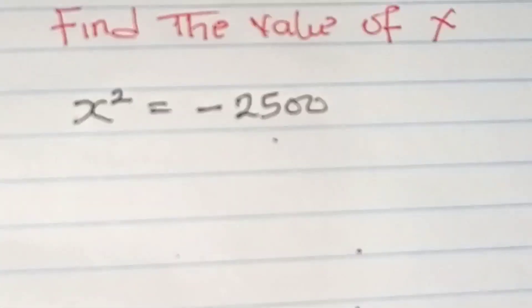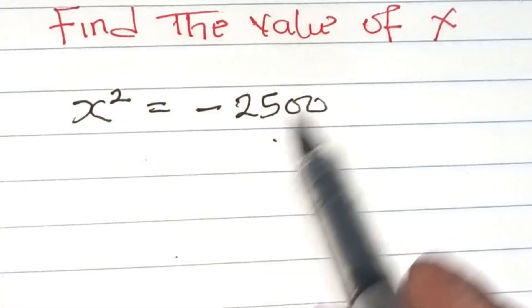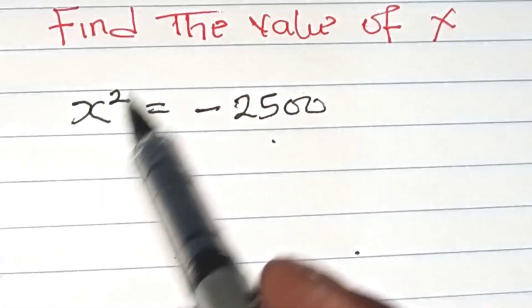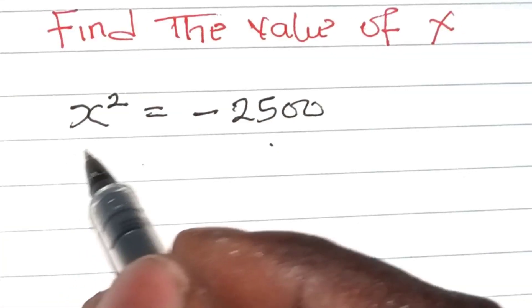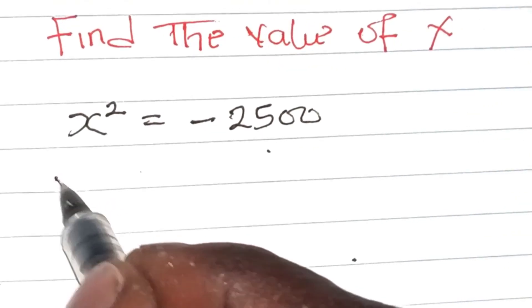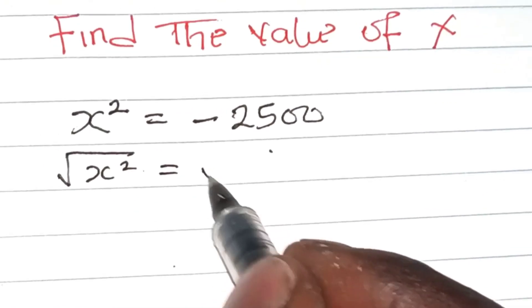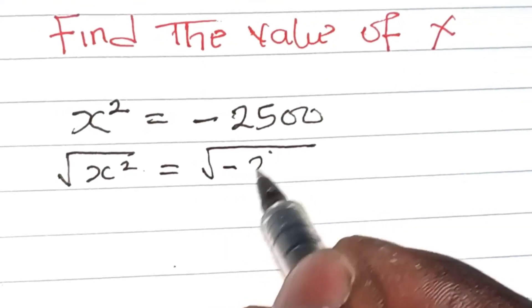If you have an equation like this: X squared equals minus 2500, what we are going to do here is take the square root of both sides. So we have square root of X squared equals square root of minus 2500.